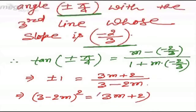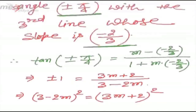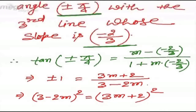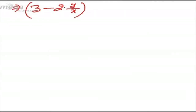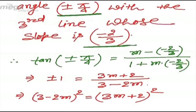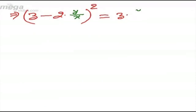From y = mx we have m = y/x. Substituting this value of m into (3 - 2m)² = (3m + 2)², we get (3 - 2y/x)² = (3y/x + 2)², which simplifies to (3x - 2y)² = (3y + 2x)².